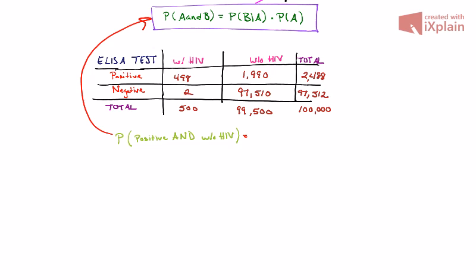The probability of someone being positive and without HIV is going to be the probability of someone who is positive given they're without HIV times the probability that someone is without HIV. So I'm mimicking what I'm showing in that boxed formula. So if we work it out, the probability of someone who tests positive given that they are without HIV is going to be this 1,990 out of the 99,500. Remember this is the conditional probability. We are referencing those without HIV and we are only going to ask within those people who are without HIV how many of them tested positive.